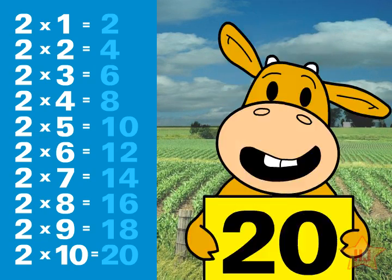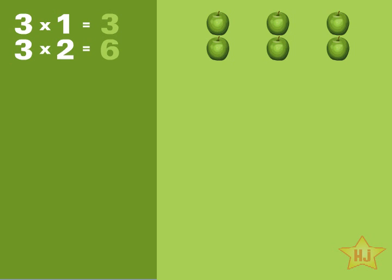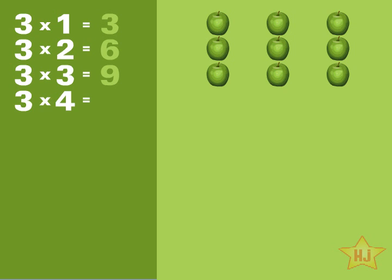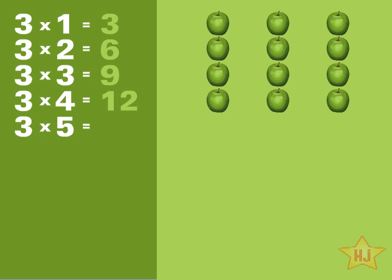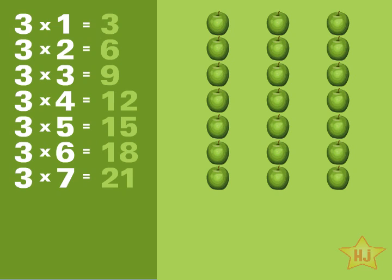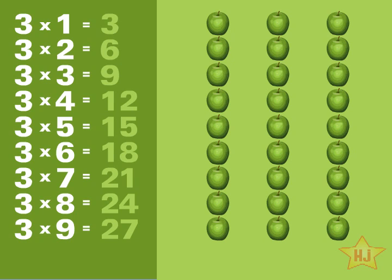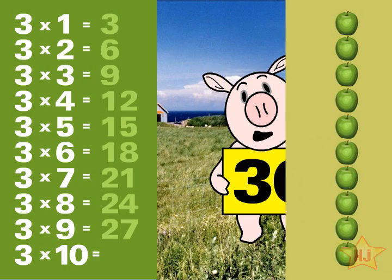3×1=3, 3×2=6, 3×3=9, 3×4=12, 3×5=15, 3×6=18, 3×7=21, 3×8=24, 3×9=27, and 3×10=30.